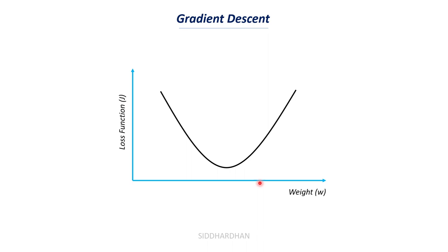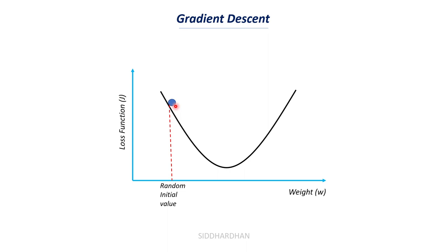Let's build a plot for weight value versus loss function value. When plotted, you get a U-shaped curve. Let's say we consider a random initial weight value — say 2 — and at that weight value the loss function is 100. The coordinate is (2, 100) where 2 is weight on the x-axis and 100 is the loss function on the y-axis. For this weight value of 2, we get a higher loss function value — it is at the top of the y-axis.